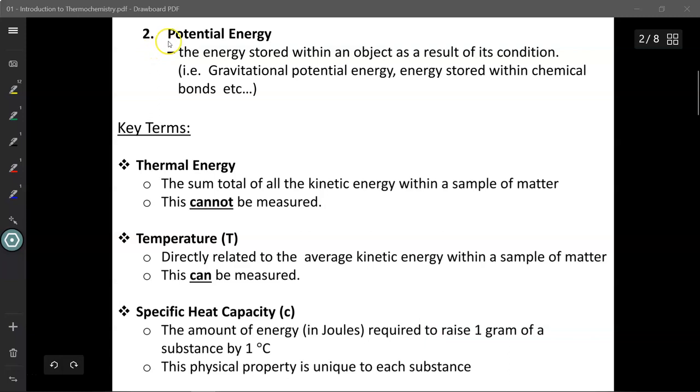The second major category is that of potential energy, and that is the energy stored within an object as a result of its condition. Examples of this are gravitational potential energy and the energy stored within chemical bonds.